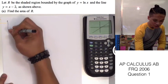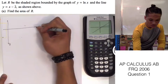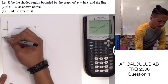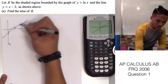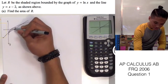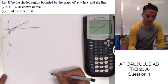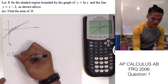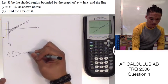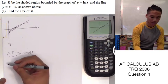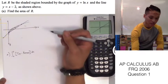Let's do a quick sketch. This is our x-axis, and this is region R. For part A, it's asking us to find the area of R. To find the area, it's just going to be the integral from A to B of our top function minus our bottom function dx. To find A and B, we have to find our points of intersection of the two functions.